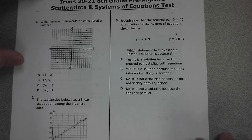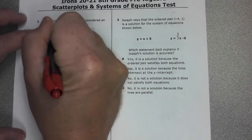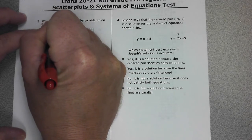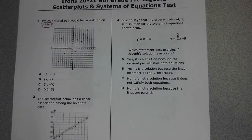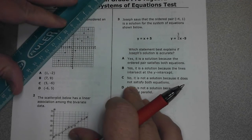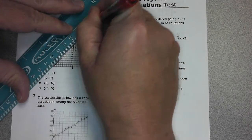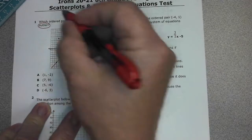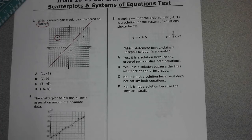This is the test corrections video for the scatter plots and systems of equations test. For number one, which ordered pair would be considered an outlier? On your corrections, write down the word 'outlier' and draw a trend line. An outlier is the point that's really far away from the trend line, and that point is right here.